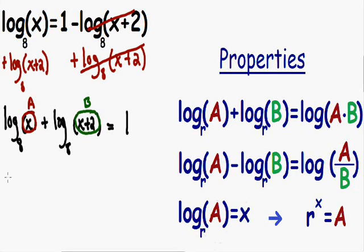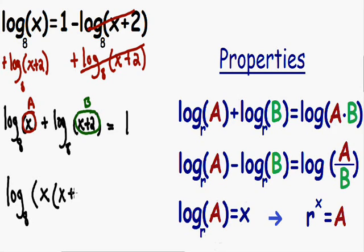These two logs can be rewritten as one single log with the same base of 8, and now we need to multiply our a times our b. Our a, which is x, is going to be multiplied by our b, which is (x + 2). So now we have rewritten these two logs as one single log, and our right side of the equation stays exactly the same.